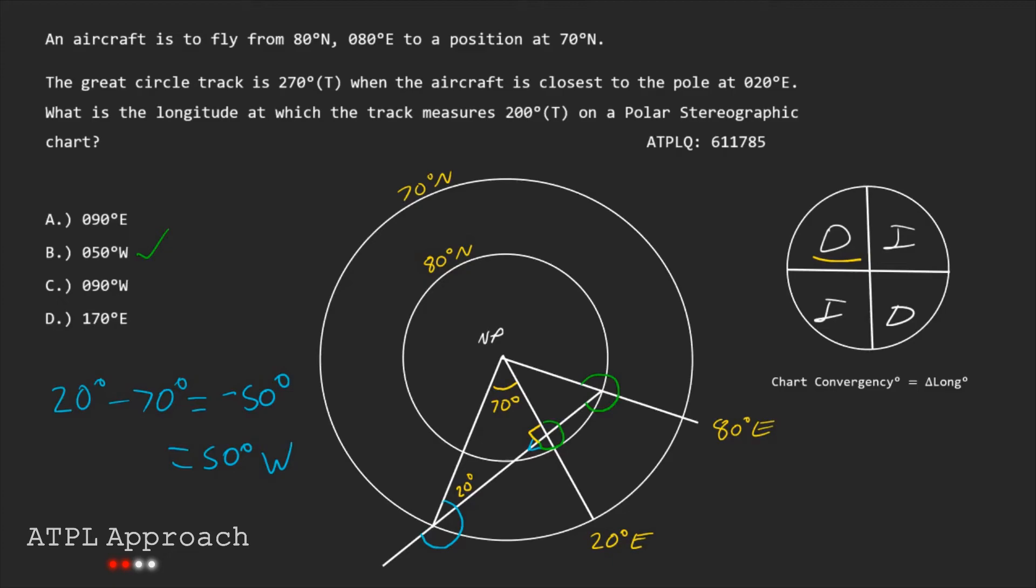Well we need to use this change in longitude here because when we find that we can use where we start from, for example 80 degrees east or 20 degrees east, and then we can add or subtract this chart convergency to then get where we will end up at. And what this chart convergency is, that's how much our track is going to change. And we're told that because from 270 degrees true to 200 degrees true the difference is 70. So therefore 70 is our chart convergency and it's also our change in longitude.